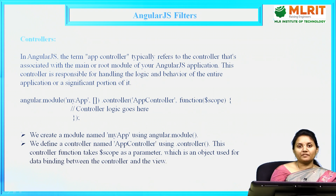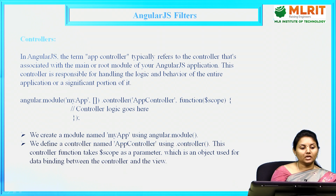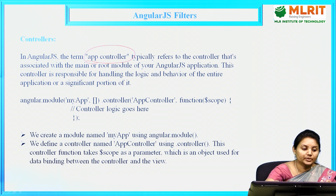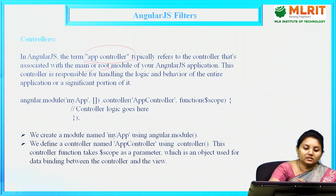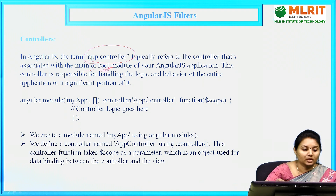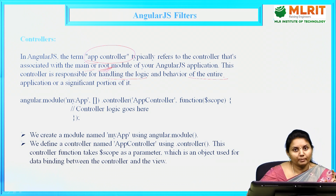Controllers: in the previous session, I told you every AngularJS application has three things — a directive, a controller, and expressions. The term 'app controller' typically refers to the controller associated with the main or root module. The root module is the first and foremost module that does not have sub-modules. The app controller refers to the controller associated with this root module.